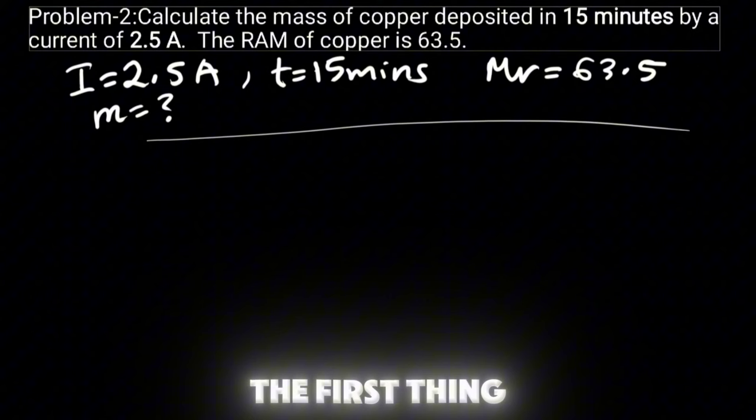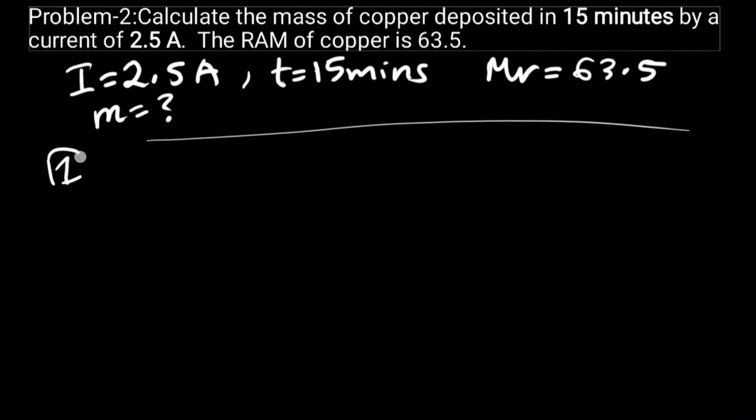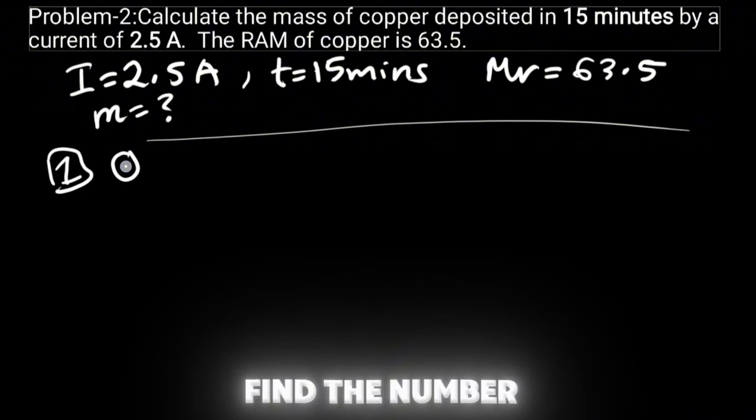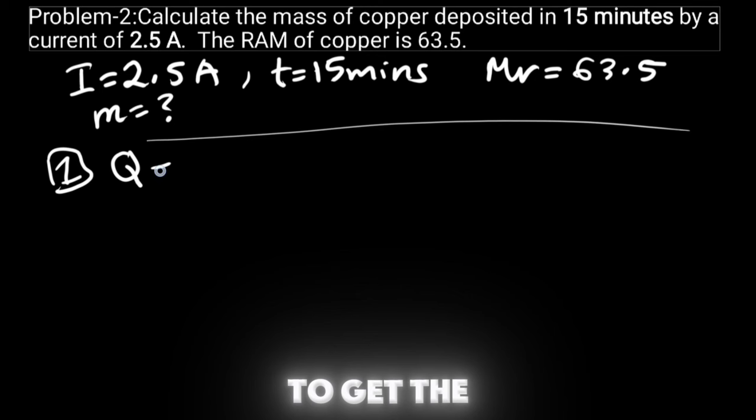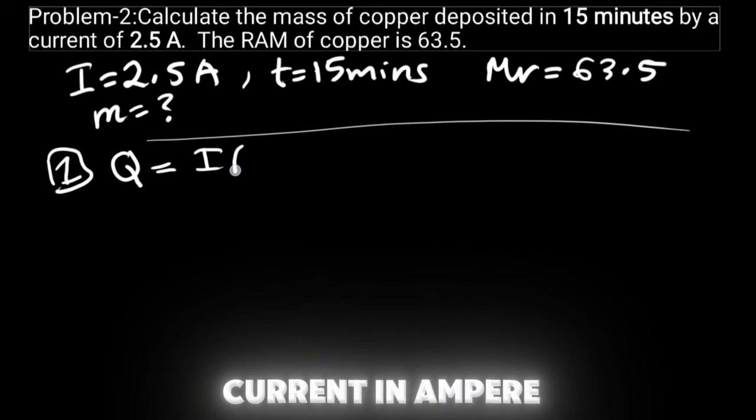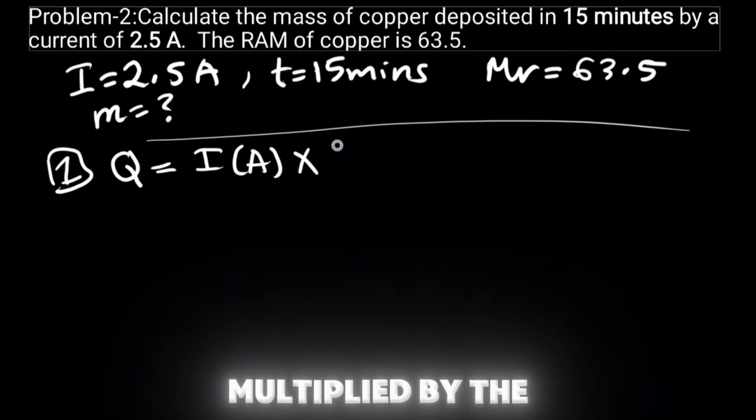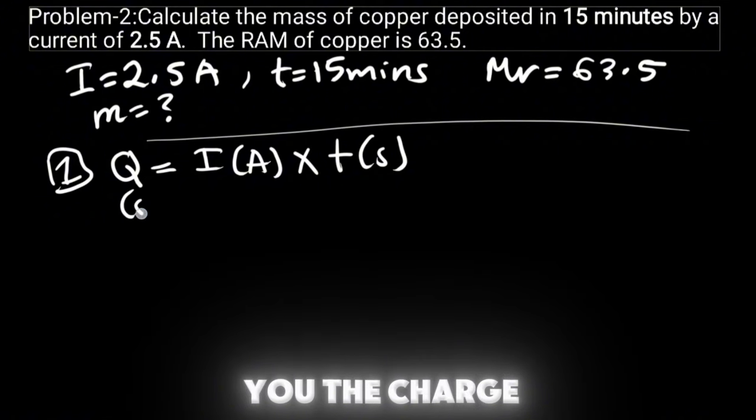To get the mass, the first thing to do is you have to find the number of charge. To get the charge, you'll take the current in amperes multiplied by the time in seconds. This will give you the charge in coulomb.